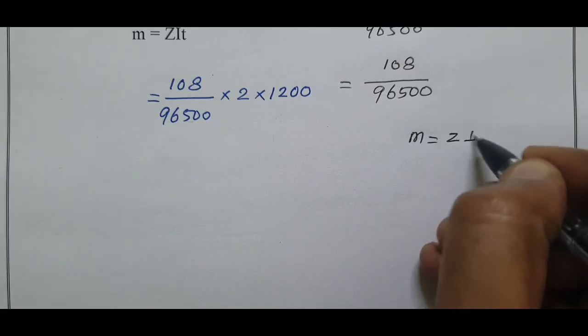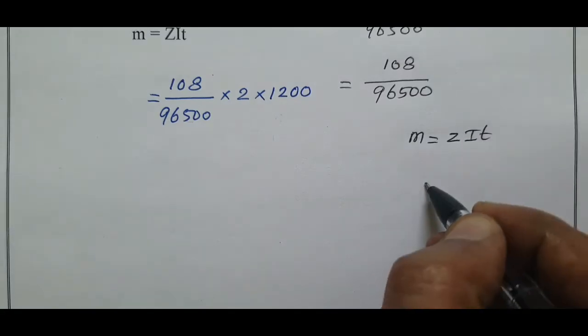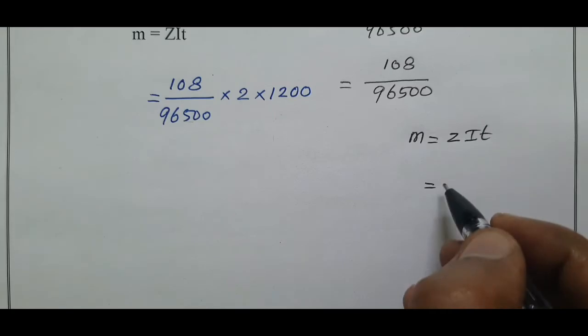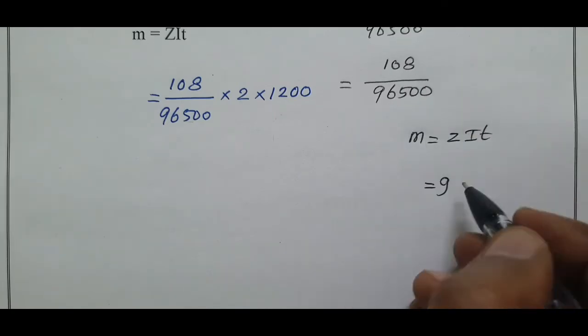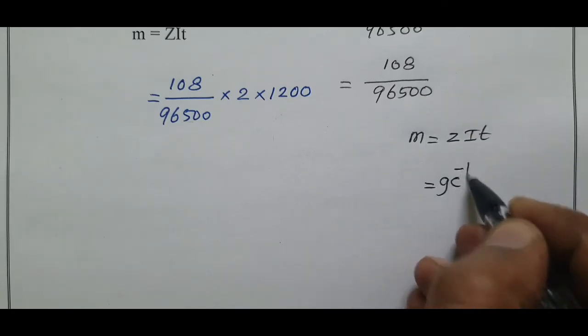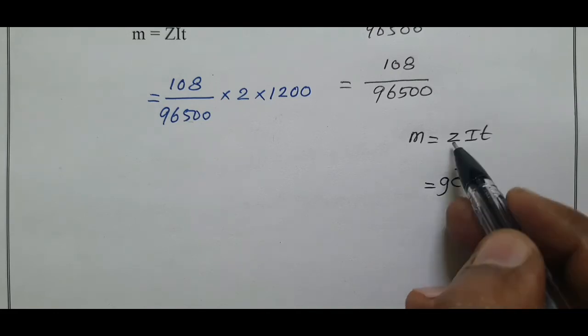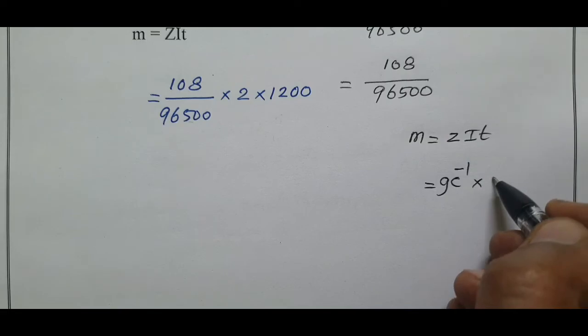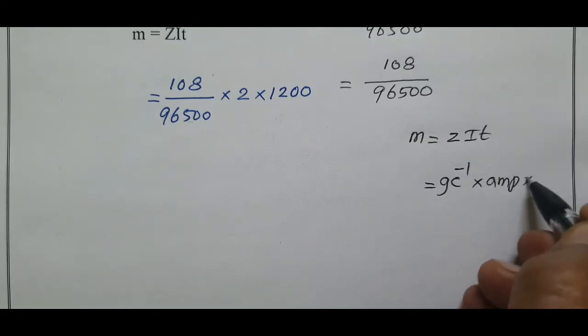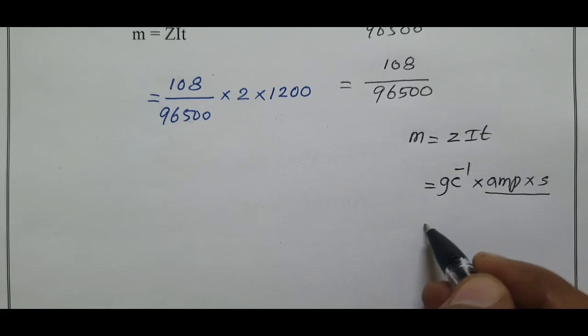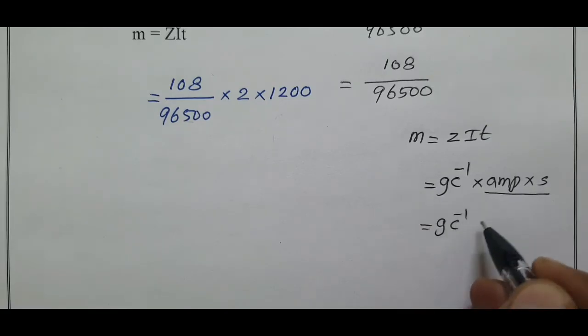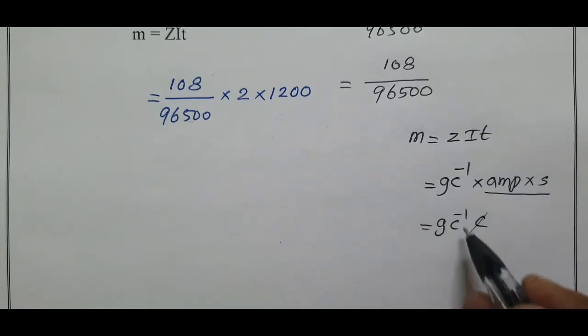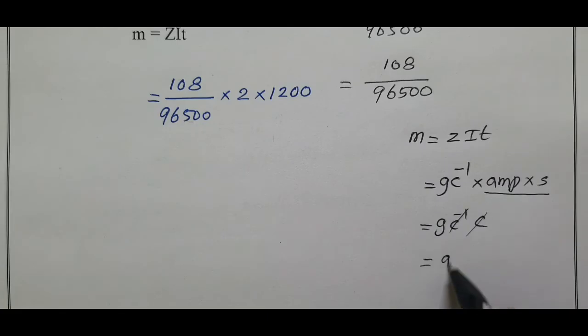Z electrochemical equivalent: equivalent mass in grams, 96,500 in coulombs. Therefore gram per coulomb is the unit of electrochemical equivalent. i is in ampere and t is in seconds. One ampere second is nothing but one coulomb. Coulomb per coulomb gets cancelled. Mass is in grams.